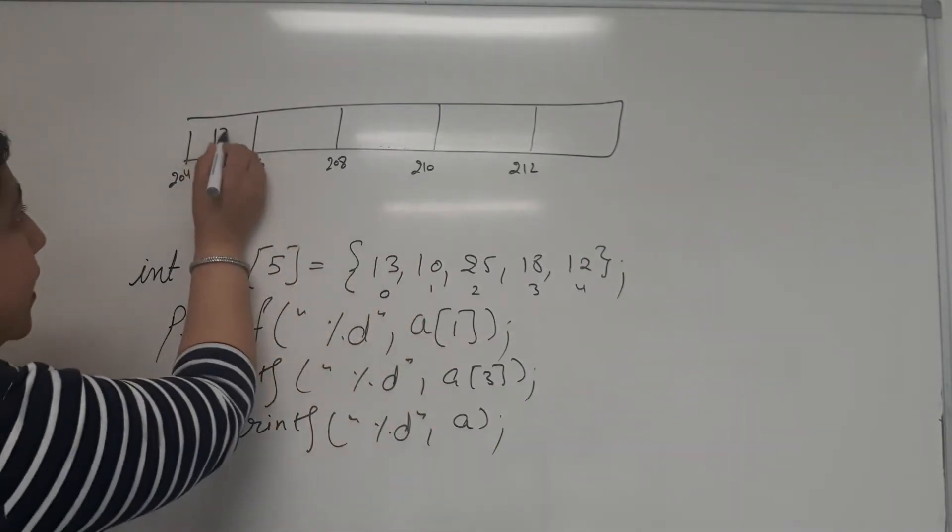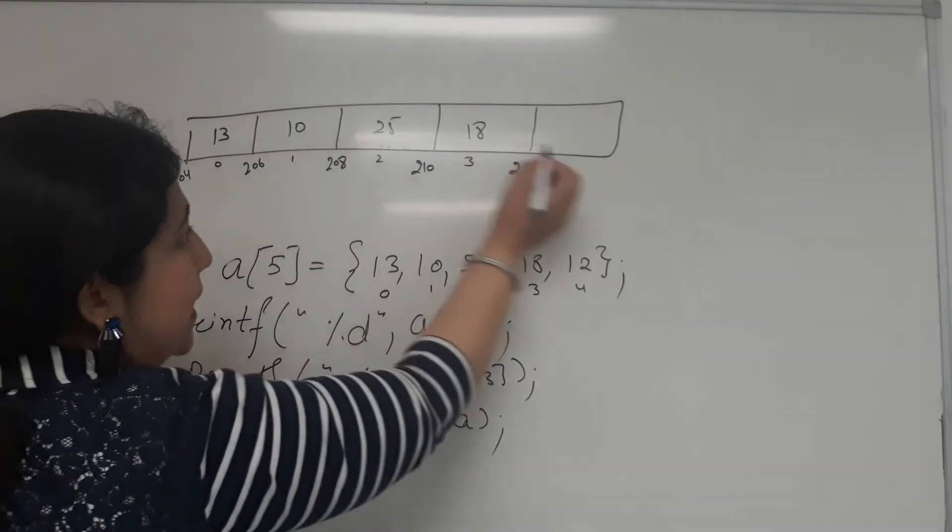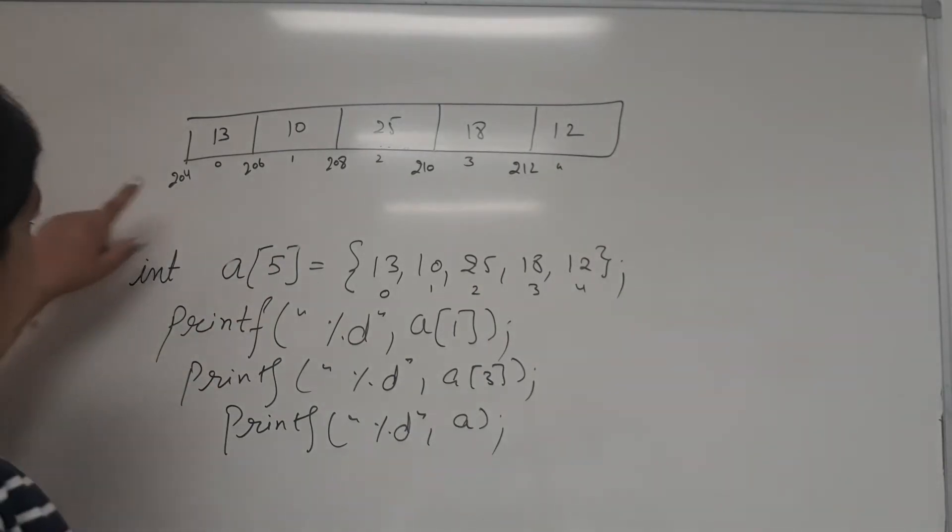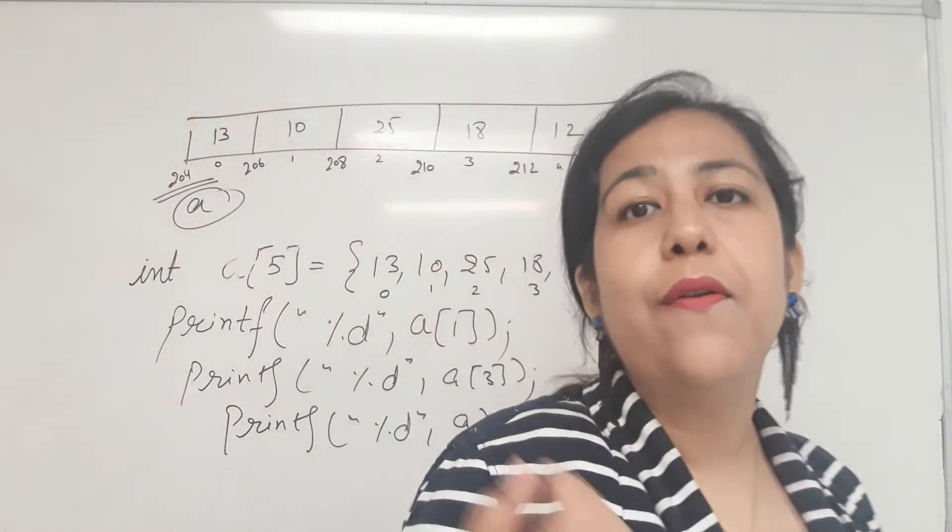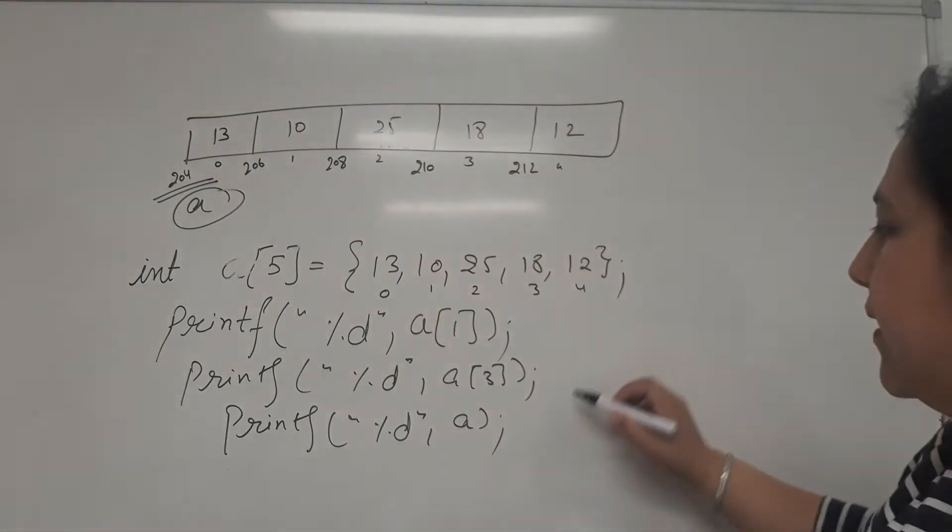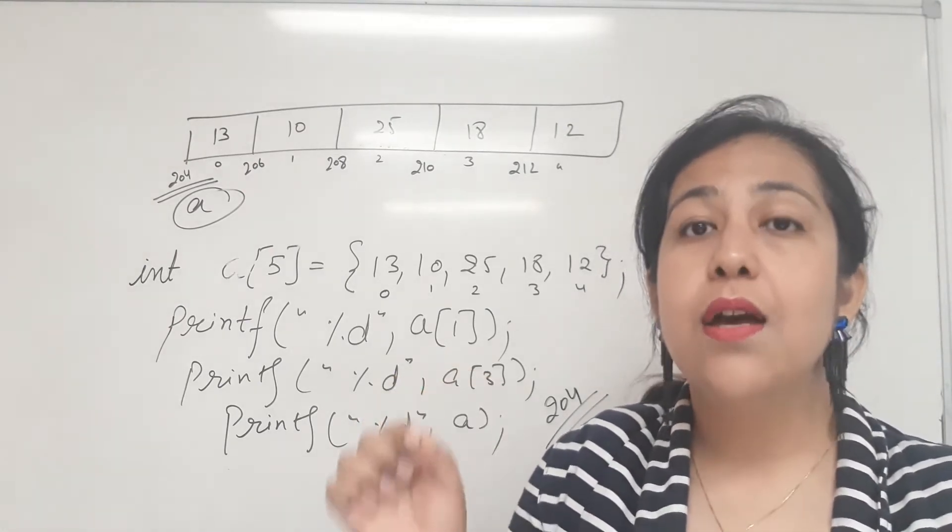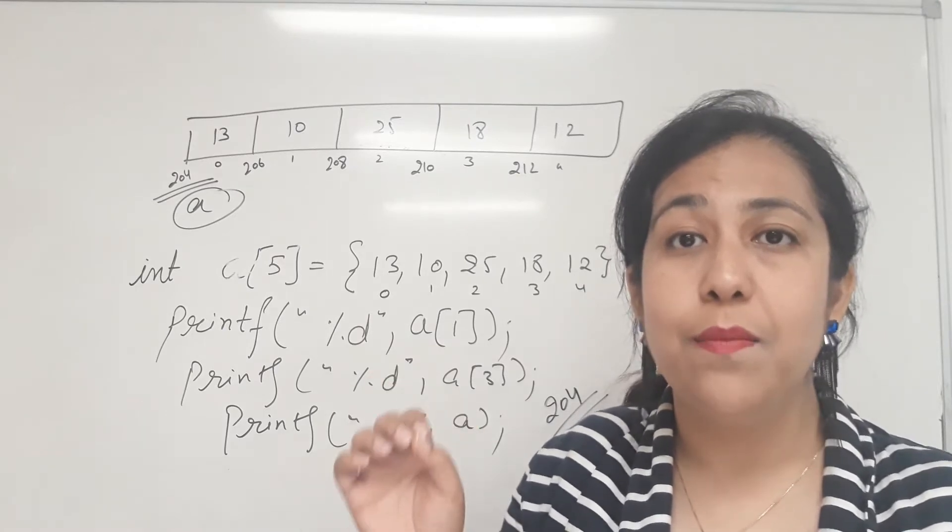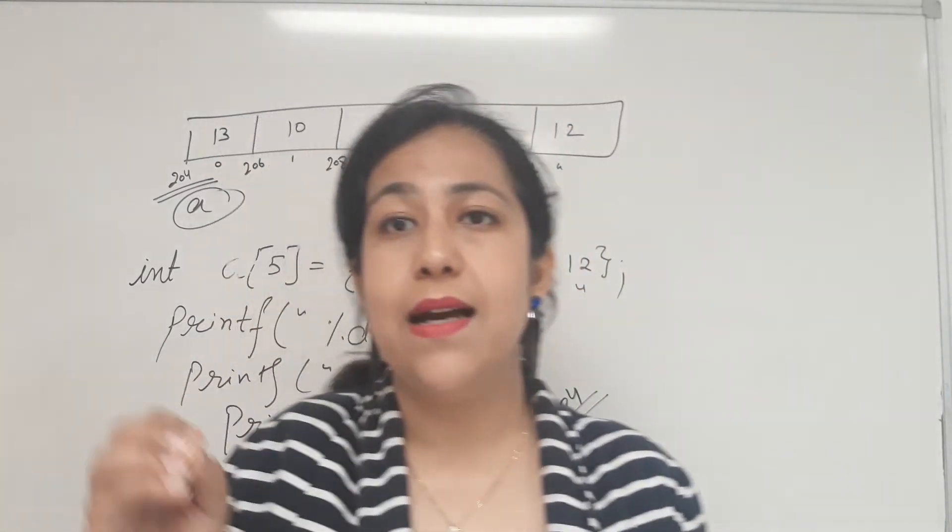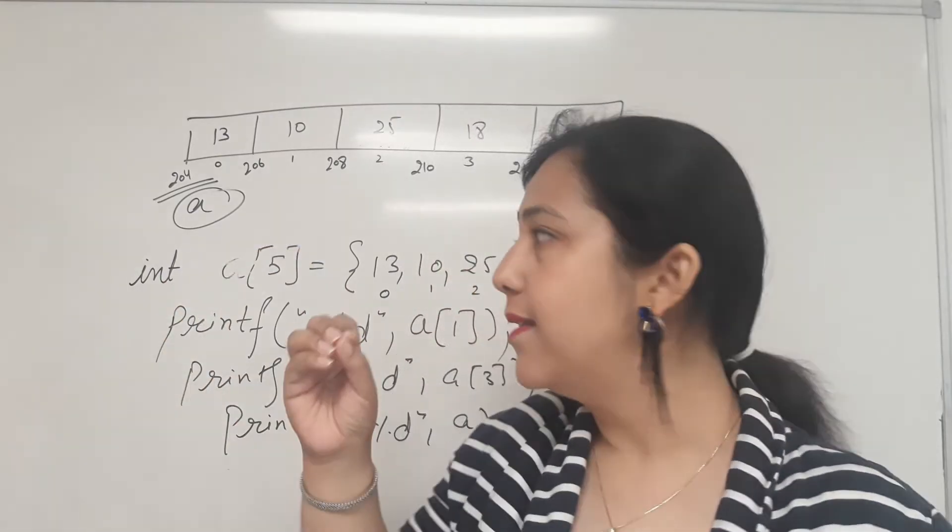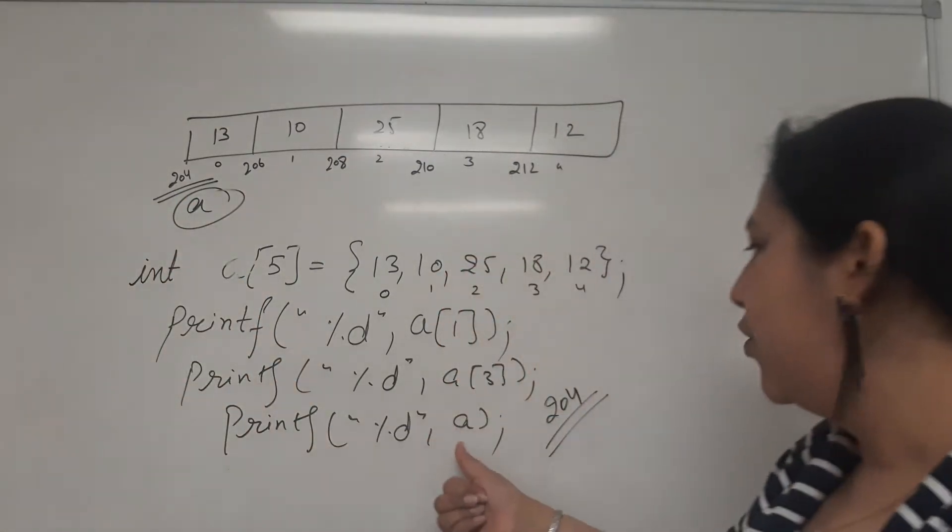Now when we have initialized it, we have stored in 0: 13, 1: 10, 2: 25, 3: 18, and 4: 12. When you print a, the first address, this itself is stored in the name of the array. So when you print a, if these are the addresses, it is going to print 204. So this shows that the array ka naam, which is the name of the array itself, is a pointer which holds the base address of the array. So name of the array itself is a pointer which holds the base address of the array.